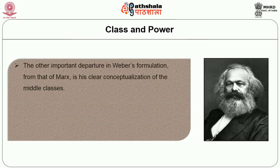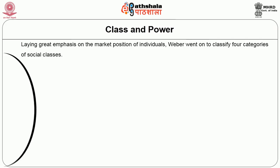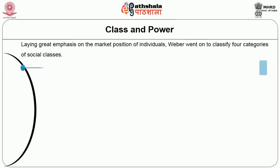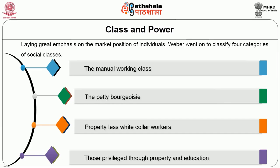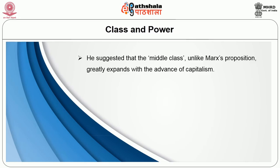Another important departure from Marx is Weber's conceptualization of the middle classes. While for Marx middle classes were mostly transitional and would eventually sink into the proletariat, Weber rejected the immiseration and pauperization theses, laying great emphasis on individuals' market position. Weber classified four categories of social classes: the manual working labour, the petty bourgeoisie, the propertyless white-collar workers, and those privileged through property and education. He suggested the middle class greatly expands with the advance of capitalism, meaning the immediate future of the working class was bound to the bourgeois order.